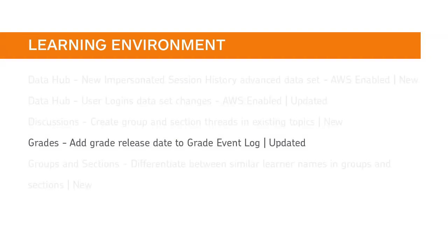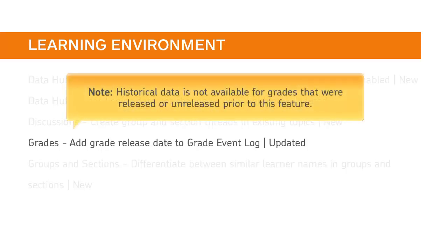Users with the Manage Grades permission can now see the exact date and time a learner's grade is released or unreleased in the Grade Event Log. Note: historical data is not available for grades that were released or unreleased prior to this feature.